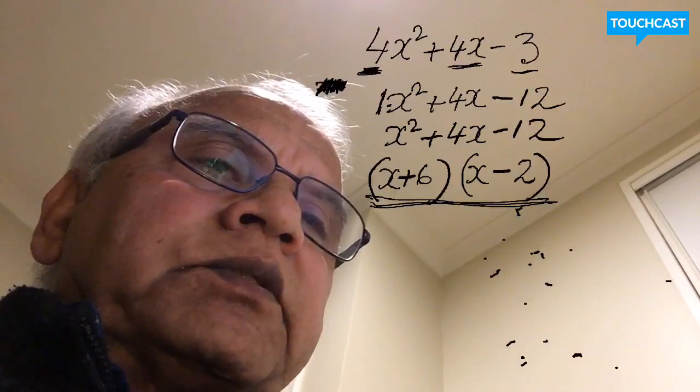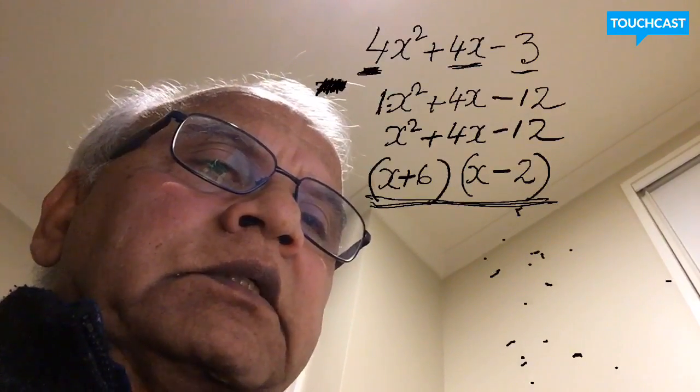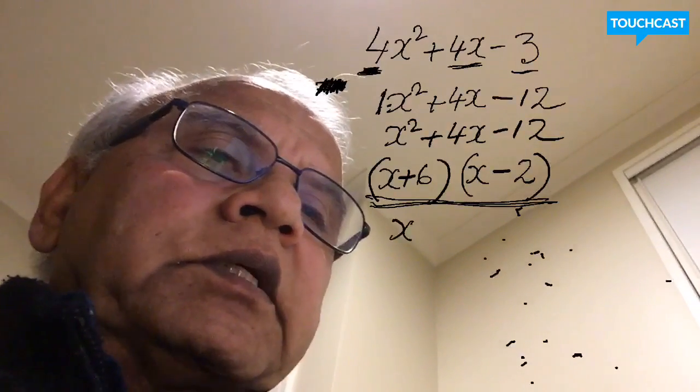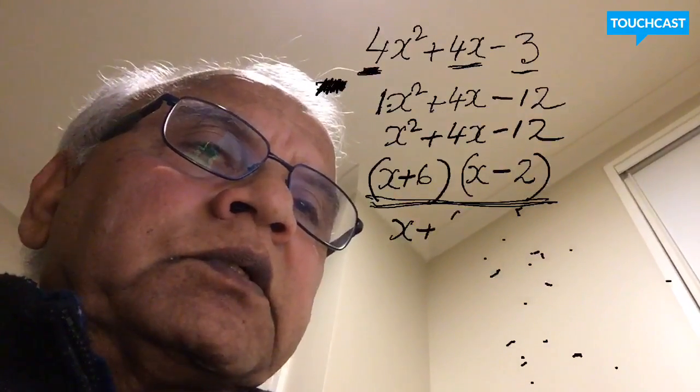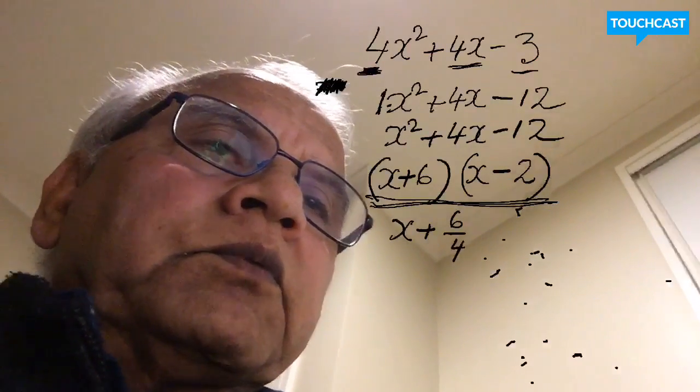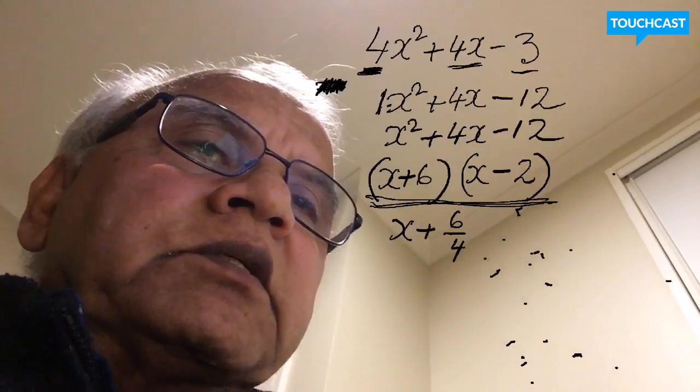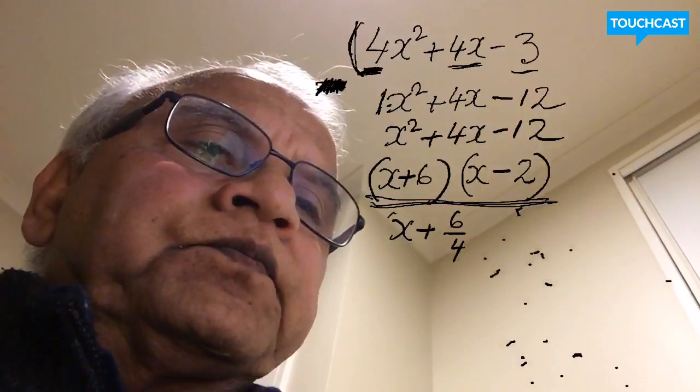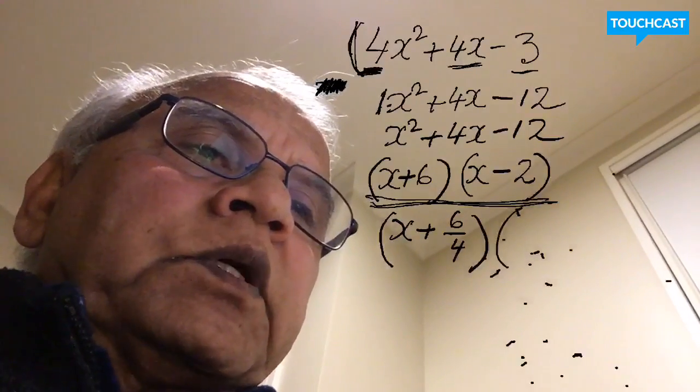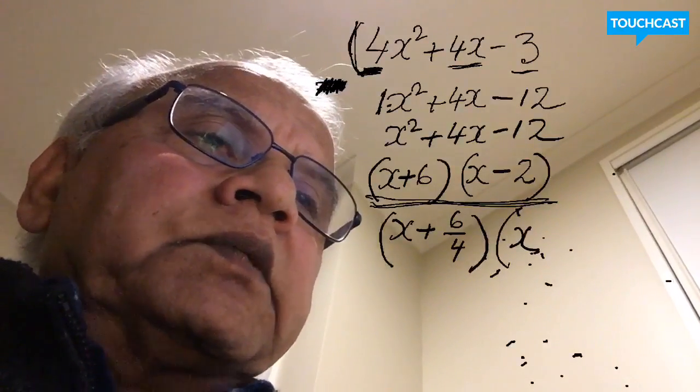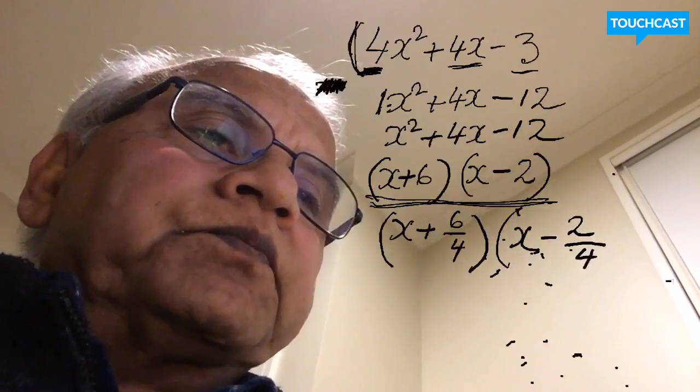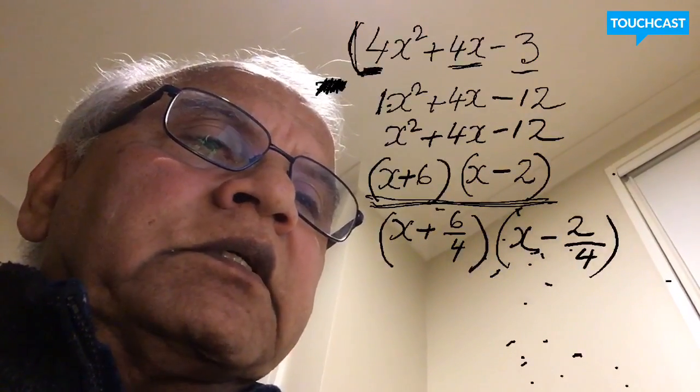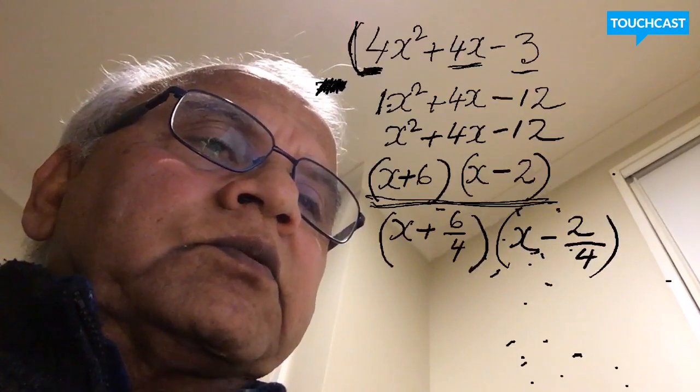So now I'm going to rewrite this as x + 6/4—why 4? Because that term had 4 in it—and then x - 2/4. Practically, I divided these two terms by 4.